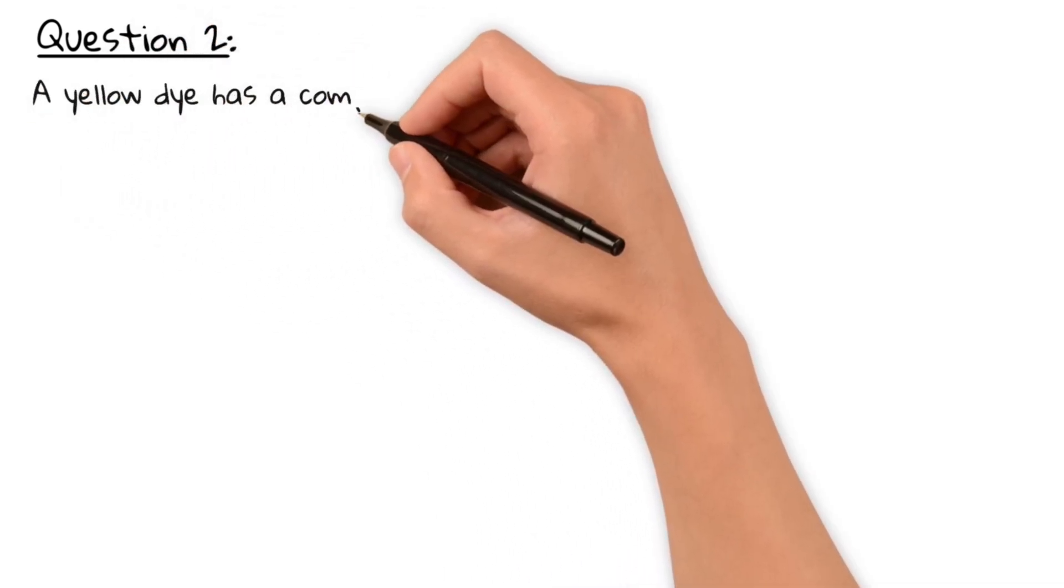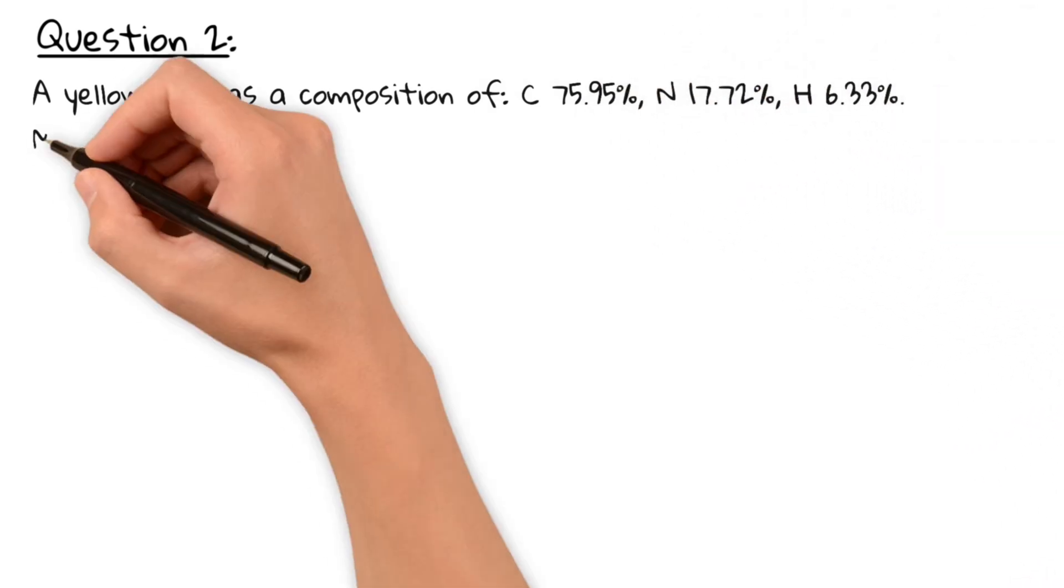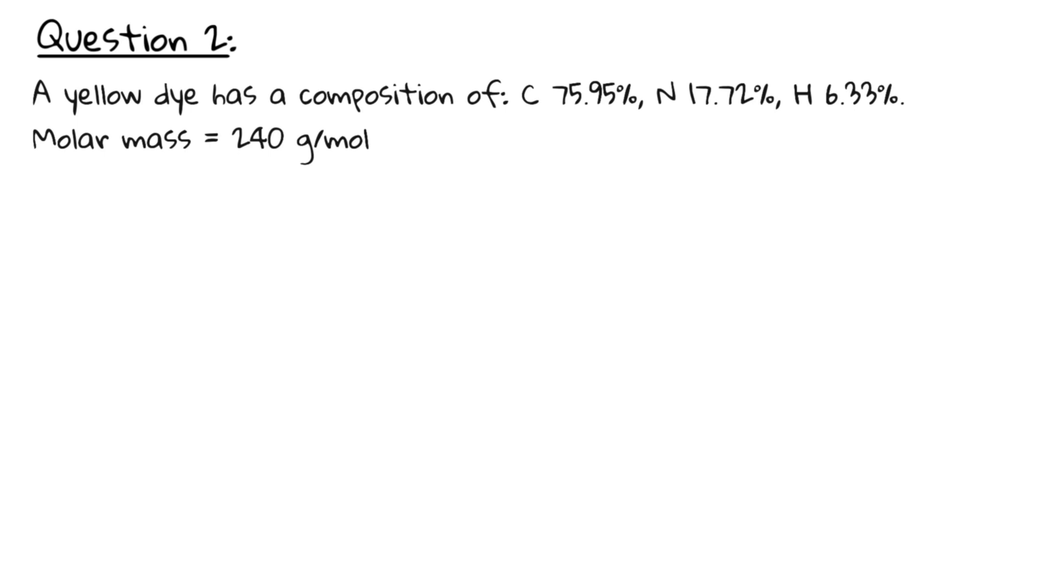Question 2. A yellow dye has a composition of carbon 75.95%, nitrogen 17.72%, hydrogen 6.33%, the molar mass is 240 g per mole. Calculate the empirical and molecular formula. Pause the video and give it a try.